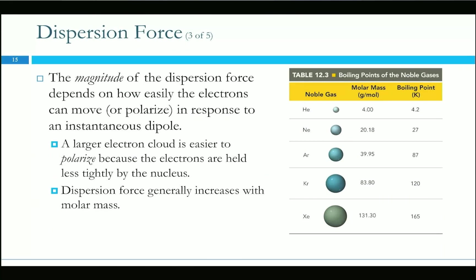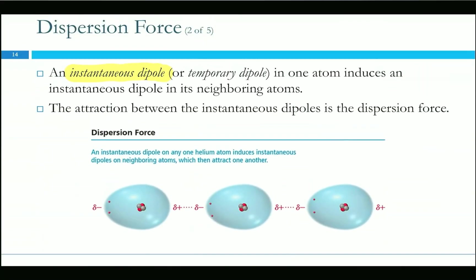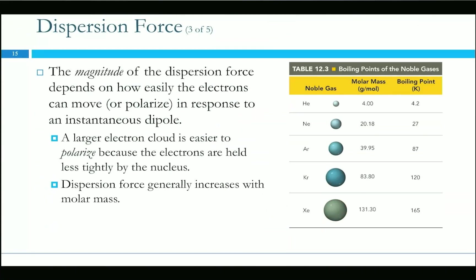We can relate dispersion force strength to molar mass, because higher molar mass means a larger atom with more protons, neutrons, and electrons. Helium has two electrons, so those two moving to the same side can cause an instantaneous dipole. But with neon, argon, krypton, or xenon — more electron shells and more electrons — we get stronger instantaneous dipoles. We call that polarizability: how much something can be polarized, meaning how much we can create an instantaneous dipole.